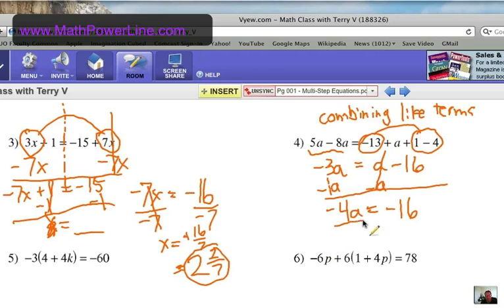So, negative 4A equals negative 16. The goal, remember, get A by itself. So, we're going to divide by the 4 and the negative sign. Don't forget the negative sign. So, now we're going to have A equals positive 4.